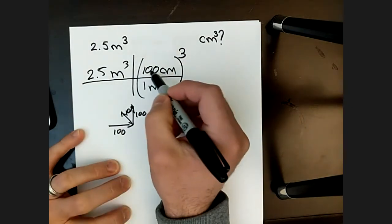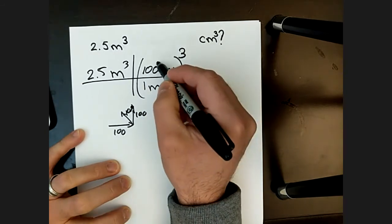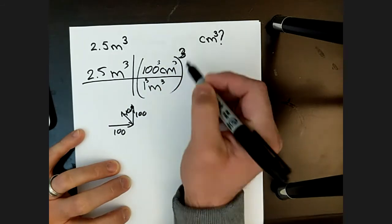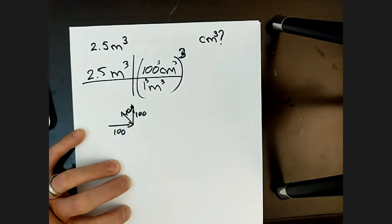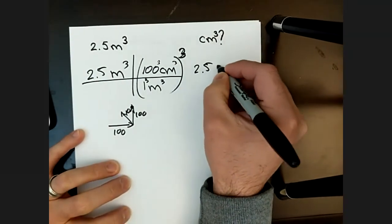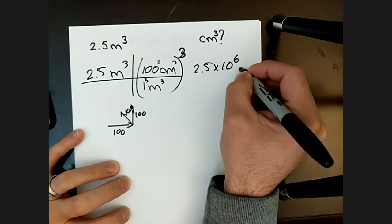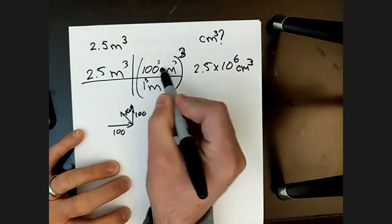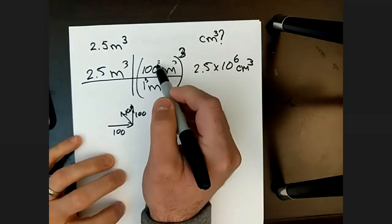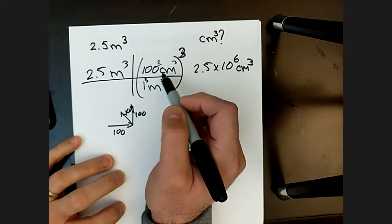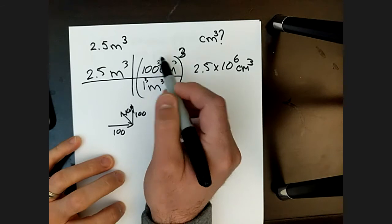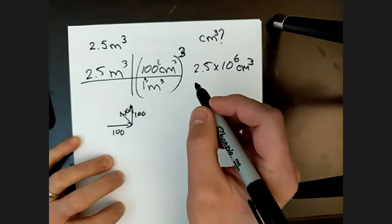So it becomes 2.5 times a hundred cubed. When you cube, it becomes a hundred cubed centimeters cubed, meters cubed. Oftentimes, when you're setting these things up, don't forget to actually cube the number. Just writing the cube on the outside is just the first step of setting it up. You actually have to put that in your calculator and do the cube when you're solving the problem.